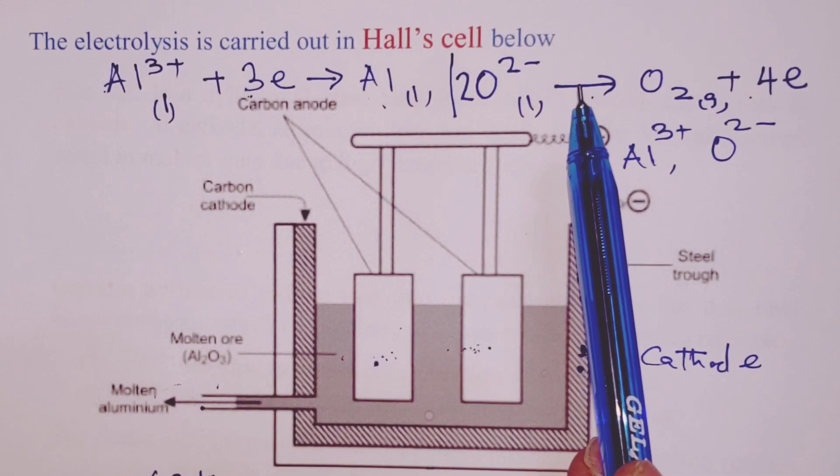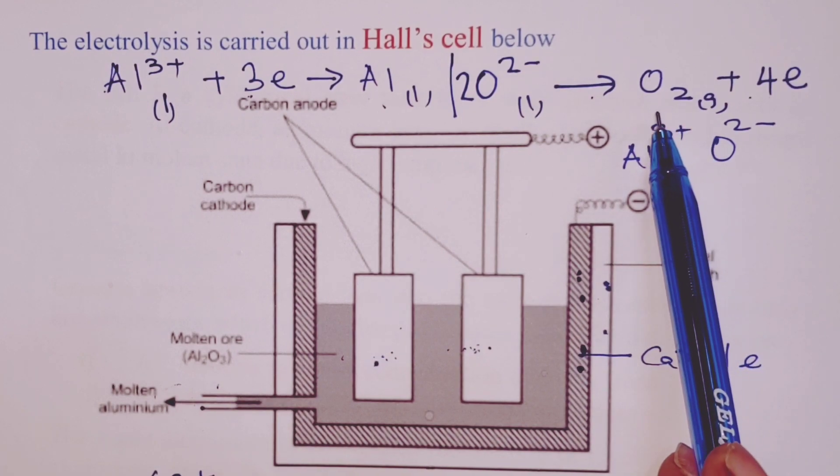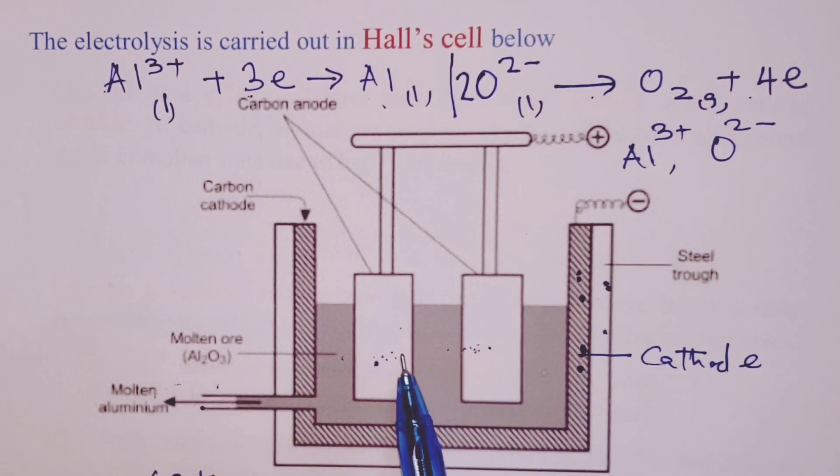Now I want us to go back to this equation at anode. We are producing oxygen gas and our material used to make the anode is carbon. So this oxygen at anode usually reacts with the graphite to form carbon (IV) oxide at high temperatures. What will happen is our rods will gradually eat away and therefore we must replace them frequently. This makes the process a little expensive.